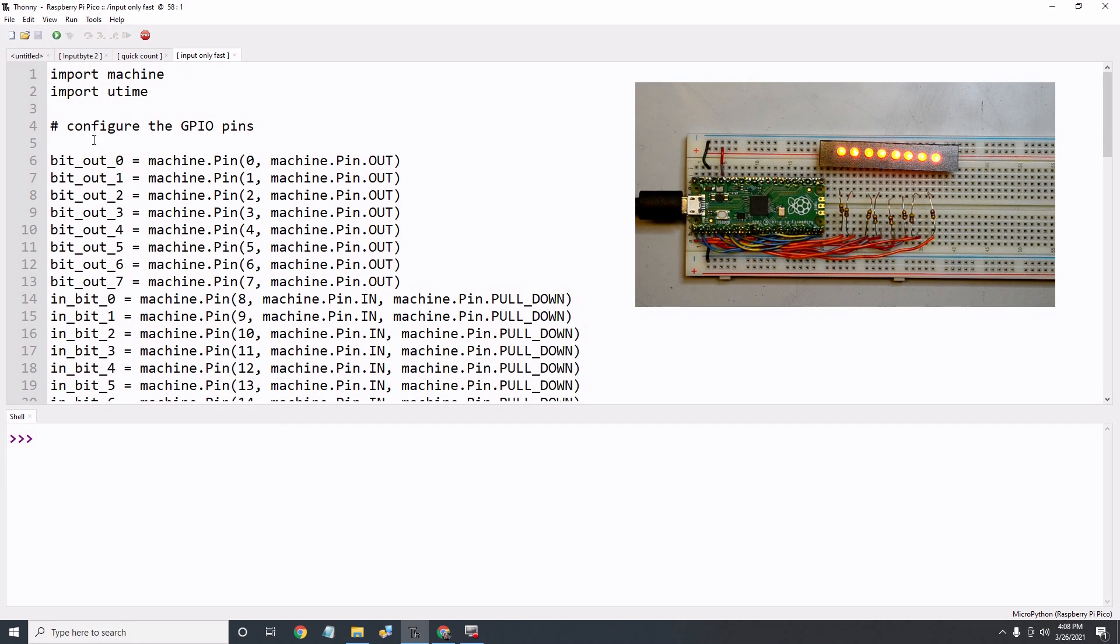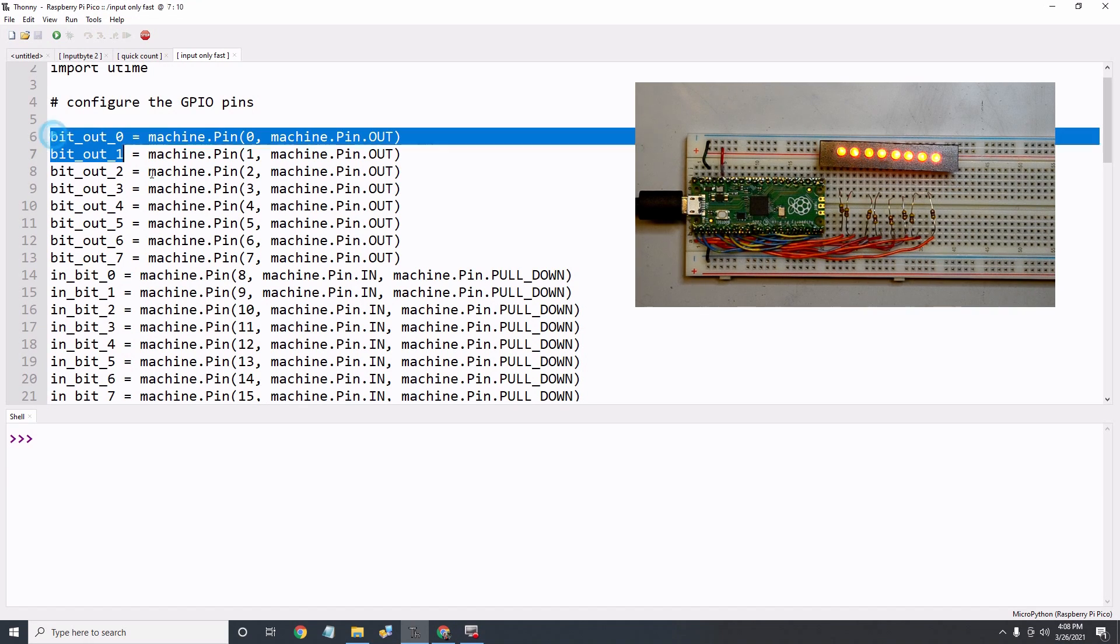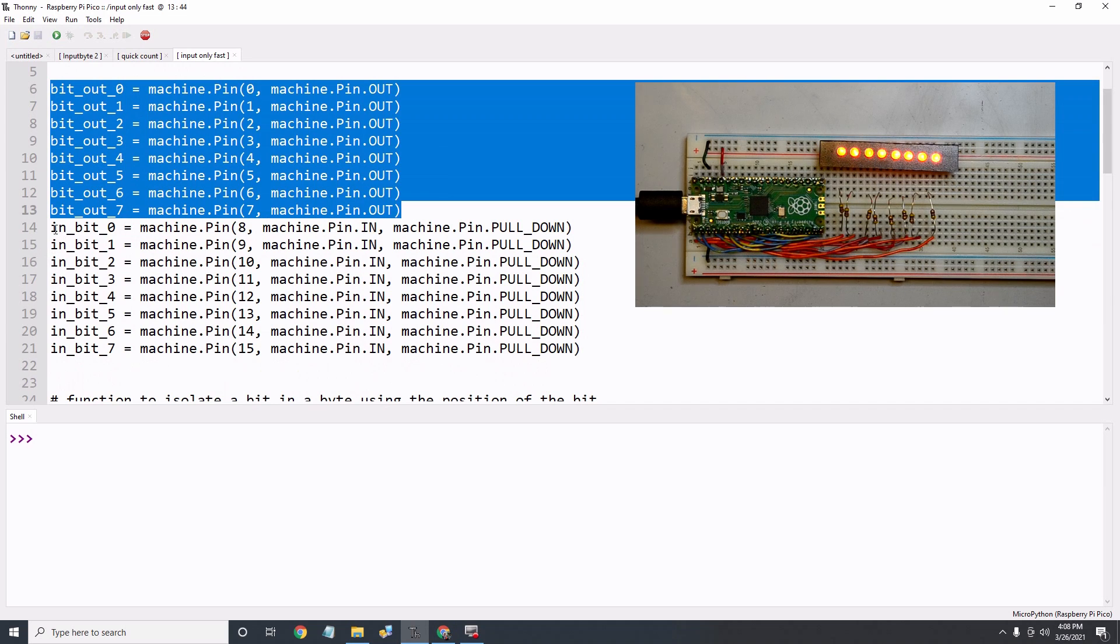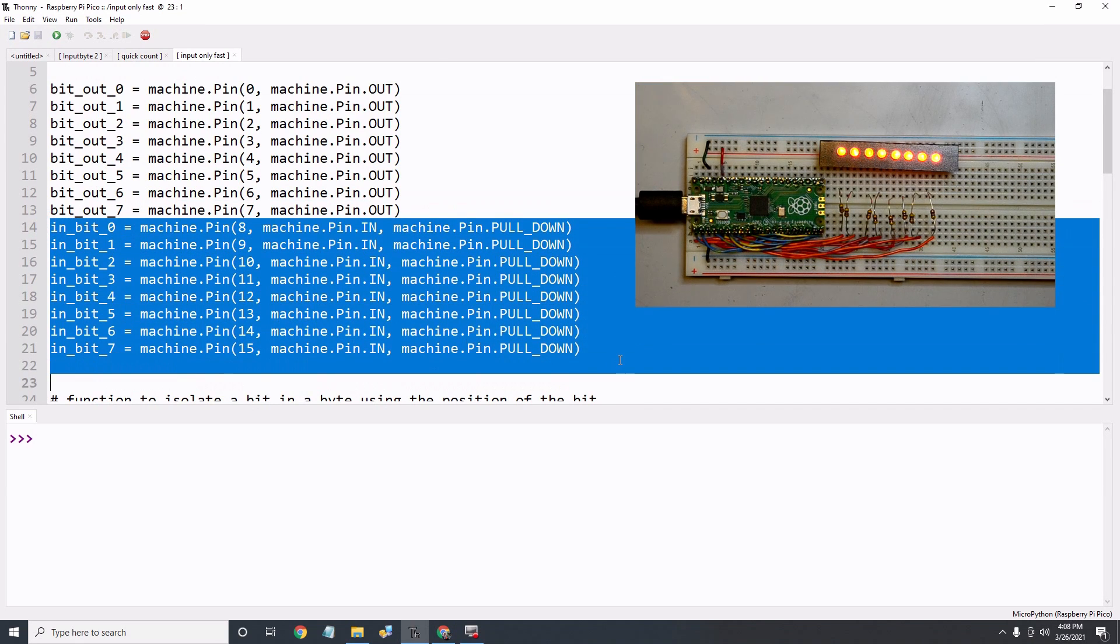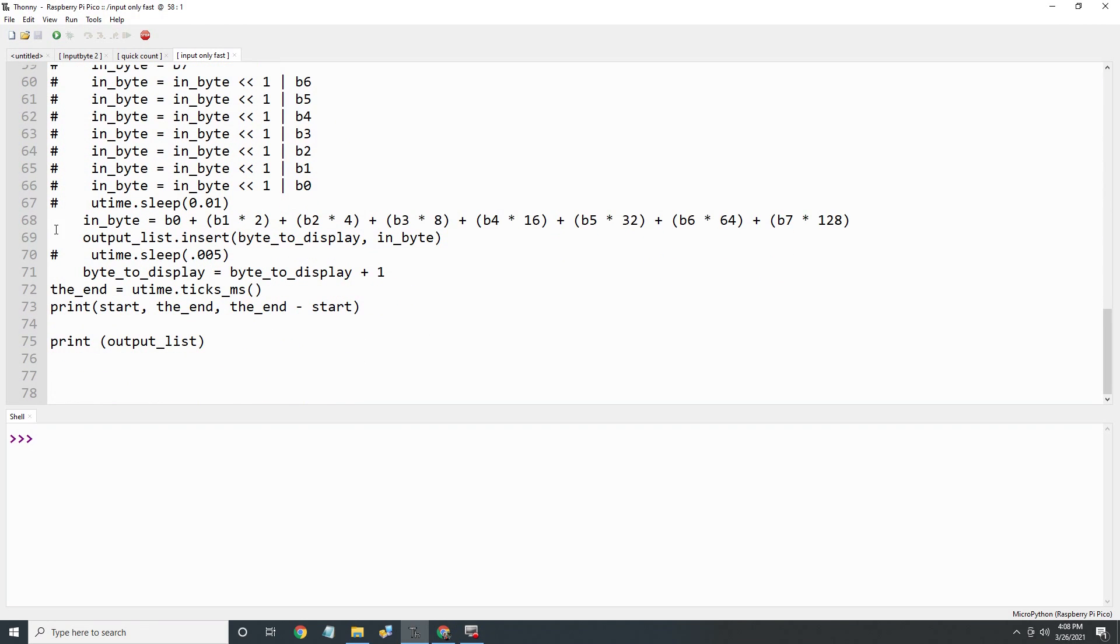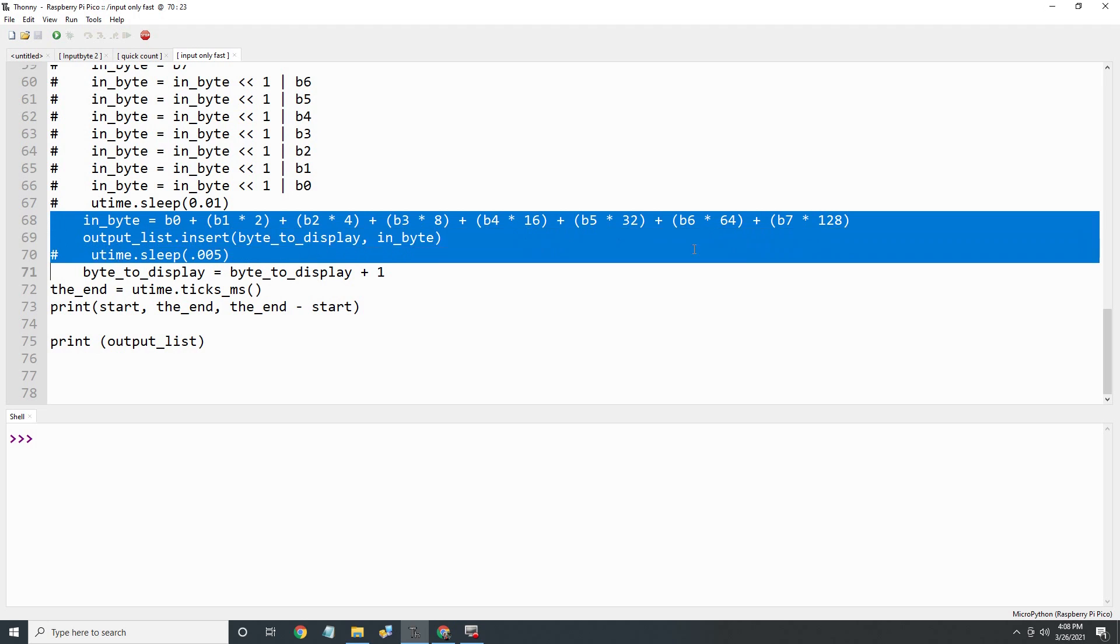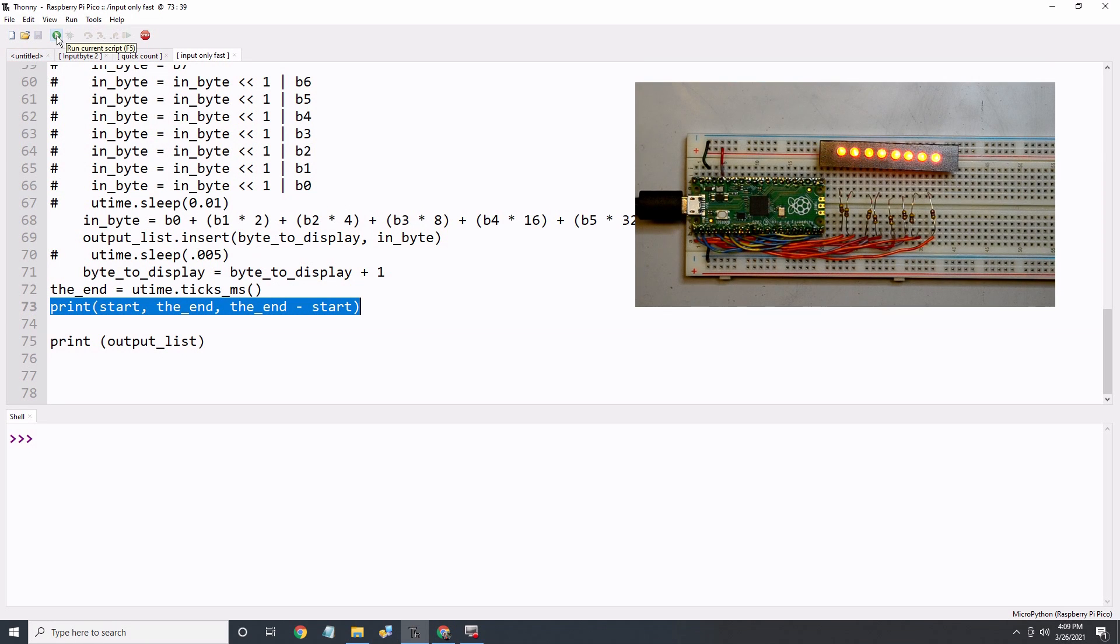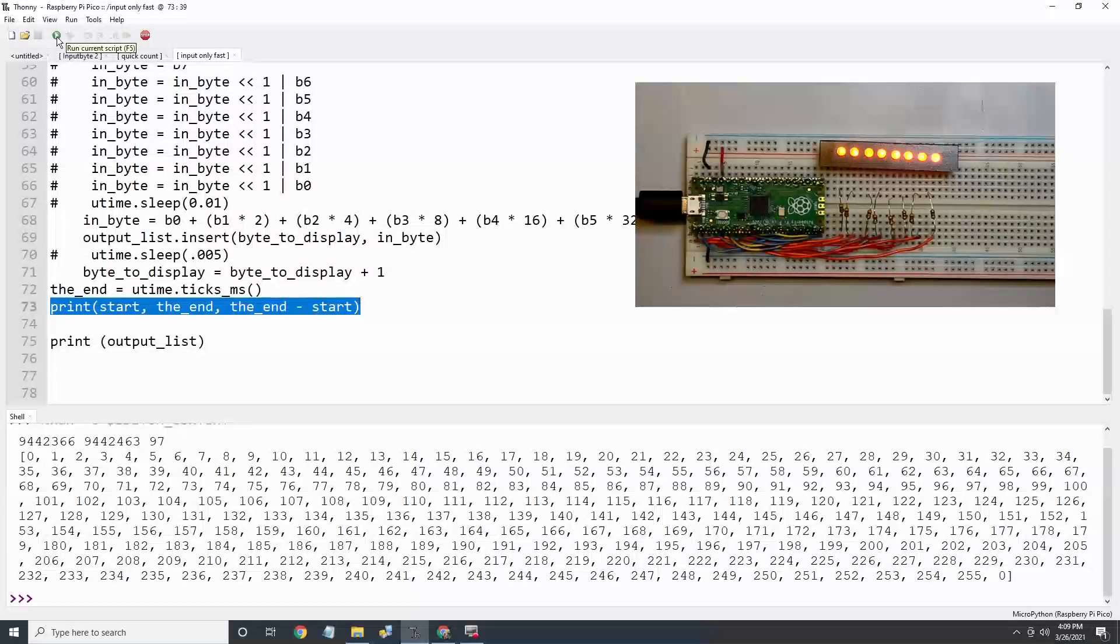To test the parallel data input throughput, I'll use the Pico itself. I'll read the byte data output on GPIO pins 0 through 7 with GPIO pins 8 through 15, which are configured as inputs. Then, I multiply and add the bit information together to reconstruct the byte that I had output. So the timing isn't affected by the THONNY output, I'll store the data in a list, and then I'll output it later. I'll start a timer at the beginning and end at 256 bytes later.